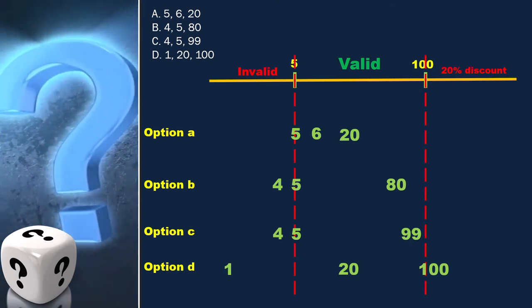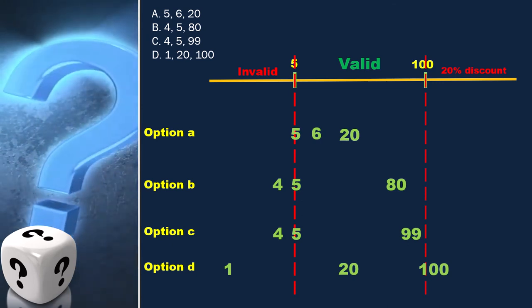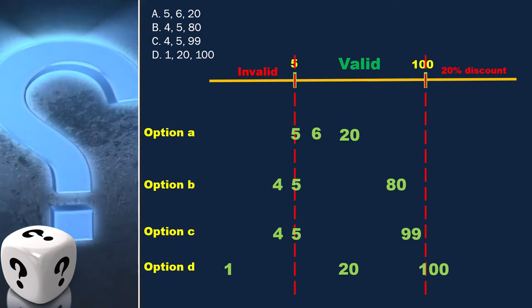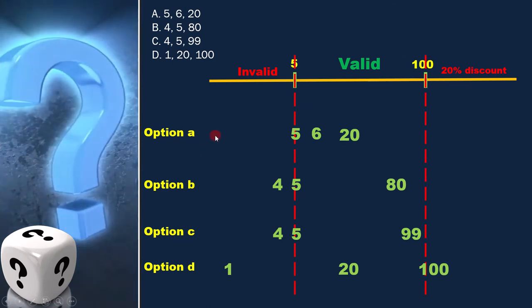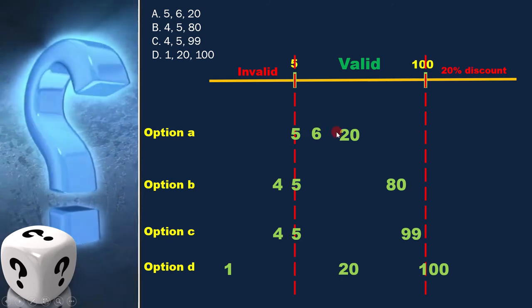Now as per the question, we have to find which of the following groups contain 3 test inputs that would be generated using boundary value analysis. In option A, 5 and 6 are at boundary but 20 is not at boundary.